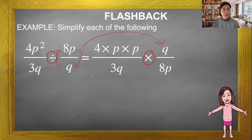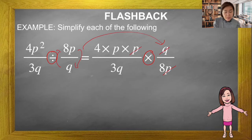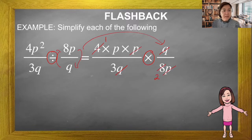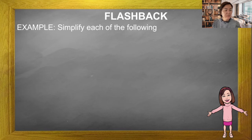I write p times p to make simplifying easier. After changing to multiplication, we start simplifying. We cut matching terms top and bottom, then q and q. We still have common factor 4 and 8: 4 divided by 4 is 1, and 8 divided by 4 is 2. What's left on top is p, on the bottom is 3 times 2 which is 6. Final answer: p over 6.